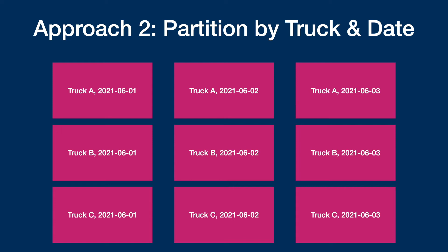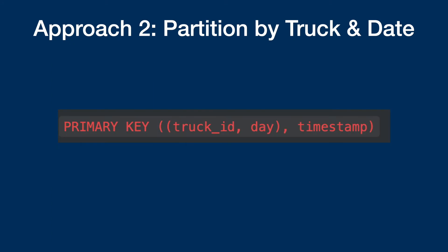In the second row we have truck B with three partitions for three different days, and so does truck C. So essentially you're partitioning by truck ID and date. When defining the primary key, this is how you define a composite partition key — you group together truck ID and day, which becomes your partition key.